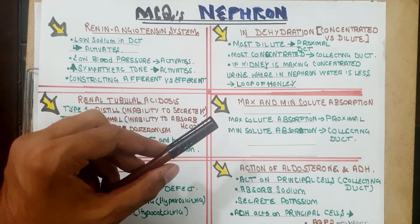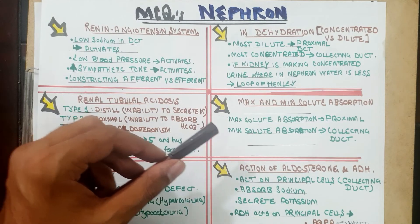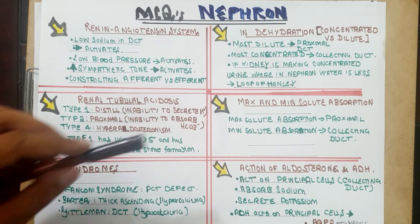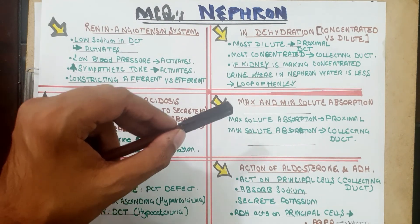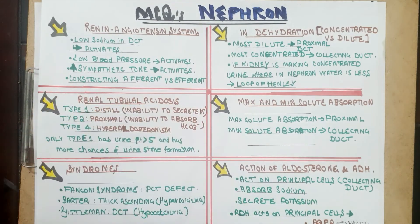Maximum solute absorption in the nephron occurs in the proximal convoluted tubule, whereas minimum solute absorption occurs in the collecting duct. Maximum 65% of sodium is absorbed in the proximal convoluted tubule, and only 3–5% in the collecting duct.